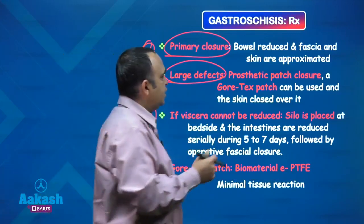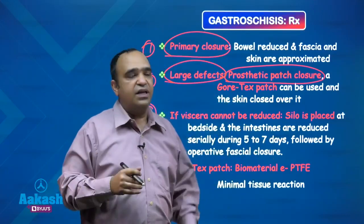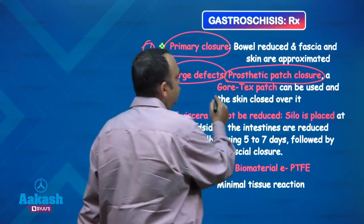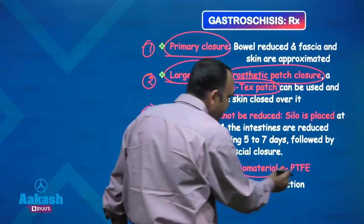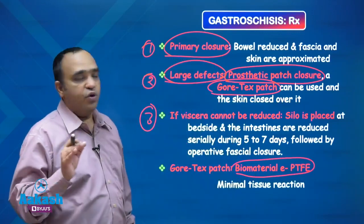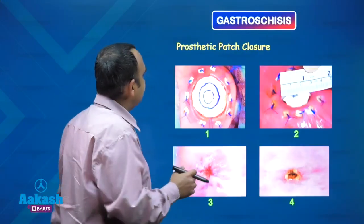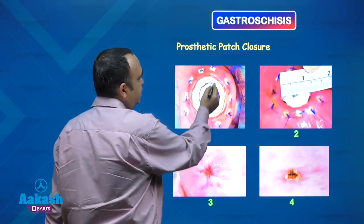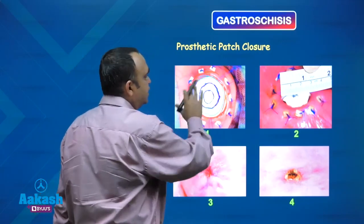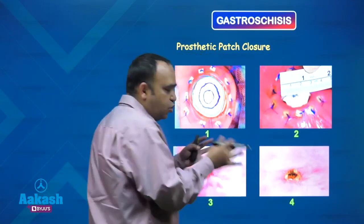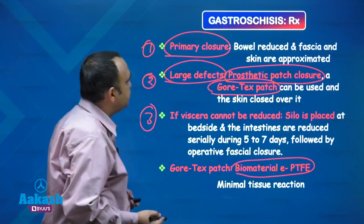When the defect is large, primary closure is difficult. In those situations, the second option is prosthetic patch closure. We place a prosthetic patch and close just the skin over it. The most commonly used patch is commercially known as the Gore-Tex patch, made of PTFE — polytetrafluoroethylene — because it causes minimal tissue reaction. The white structure in the picture is the Gore-Tex patch; once placed, we close the skin over it without needing to close the fascia.